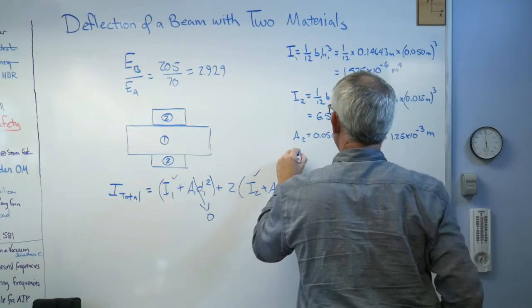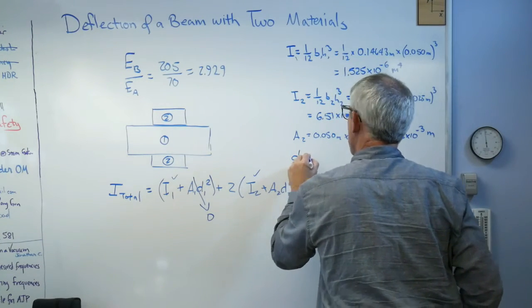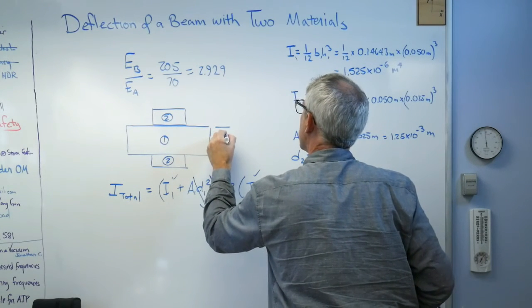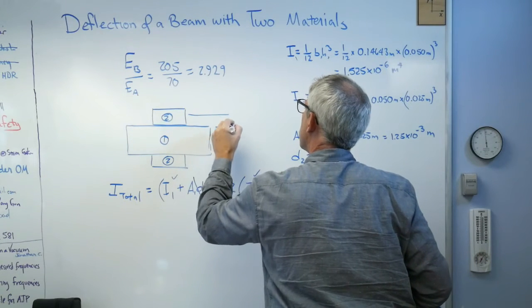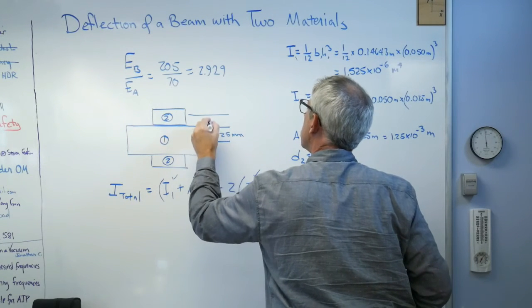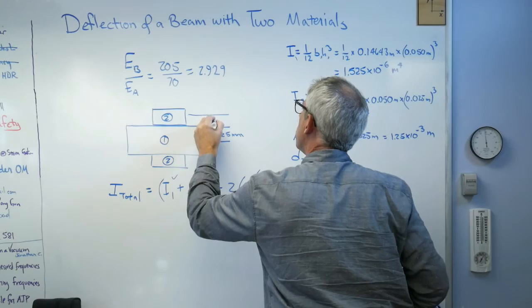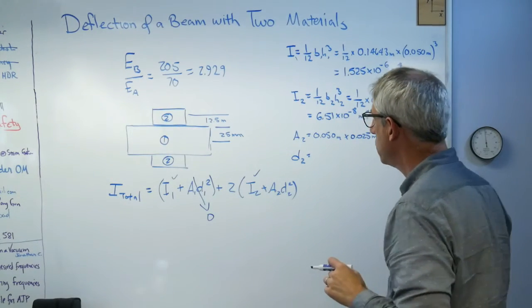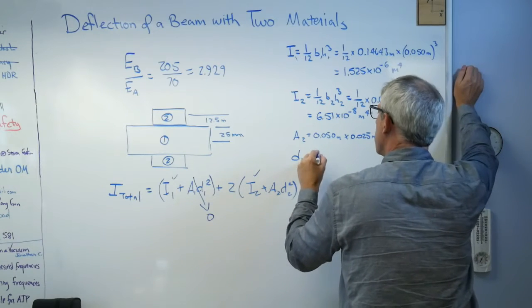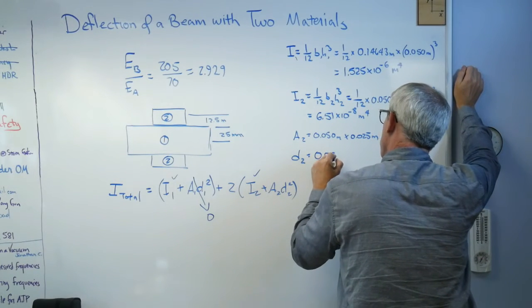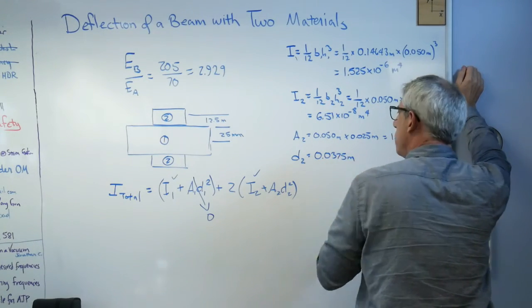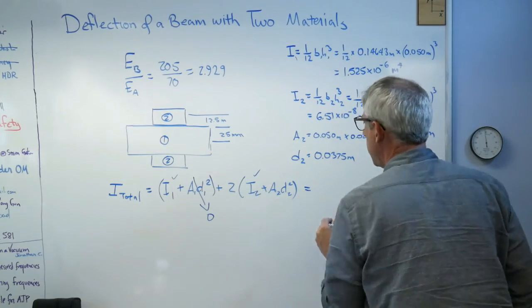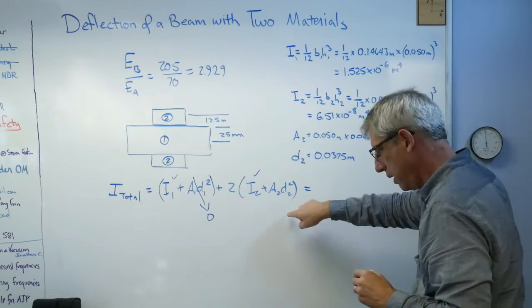And last thing I need to know is D2. Well, let's see. There to there is 25 millimeters, and that's 12.5 millimeters because that's 25. So you add those together and you get 37 and a half millimeters. So that's 0.0375 meters.